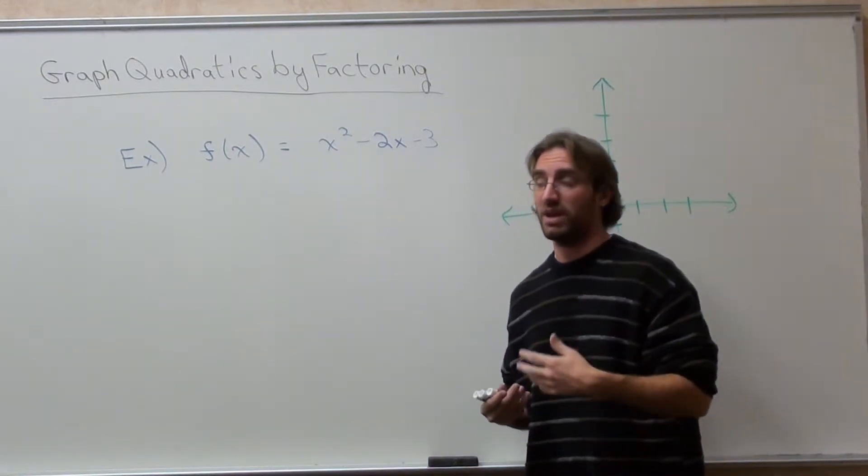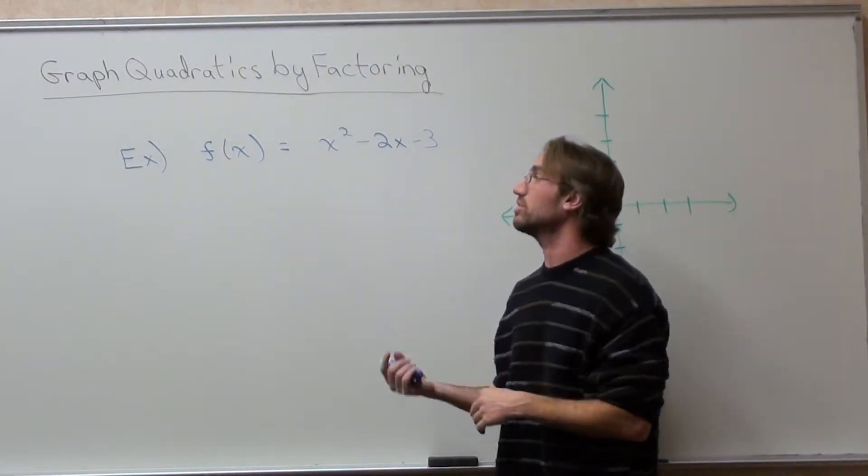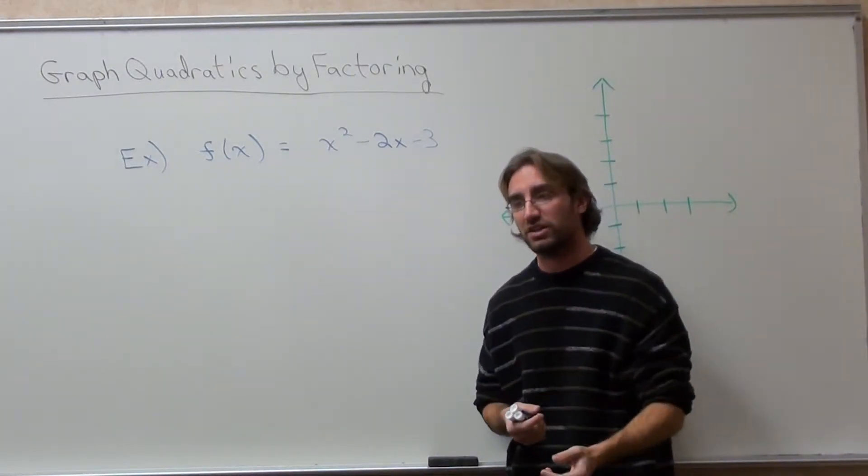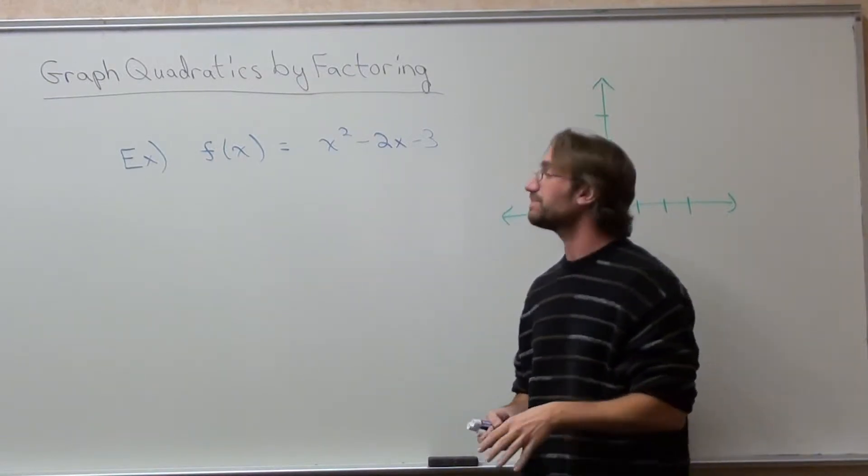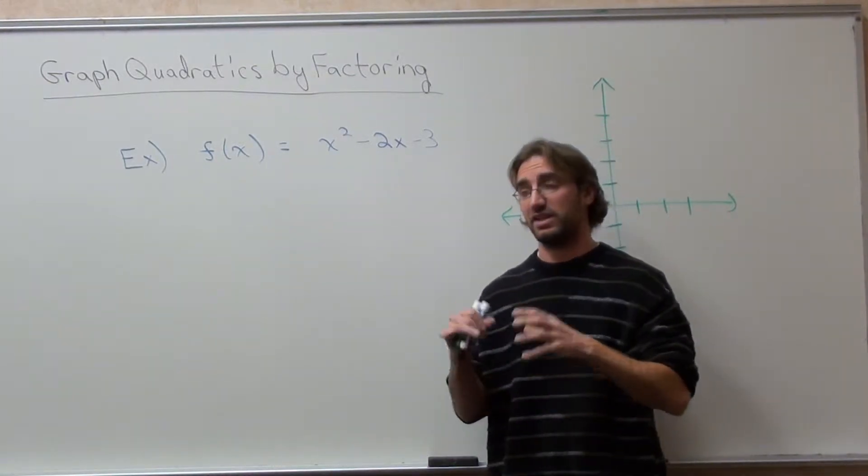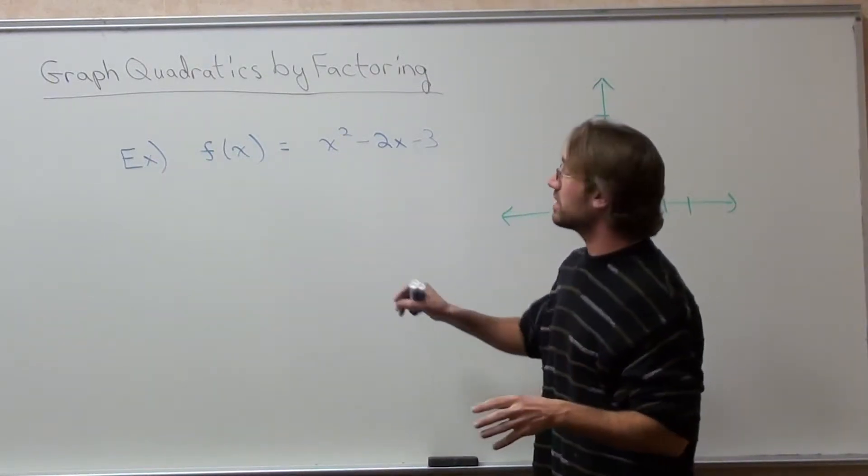One way of doing that is by factoring. If you can factor a problem - not all problems you can factor, so you can't always do this - but if it's a problem you can factor, if you want to see some tips on factoring, go back to the previous lessons on factoring. You can be able to find the zeros of an equation, and I'll explain what that means as I go through this. Let me go ahead and explain this problem.